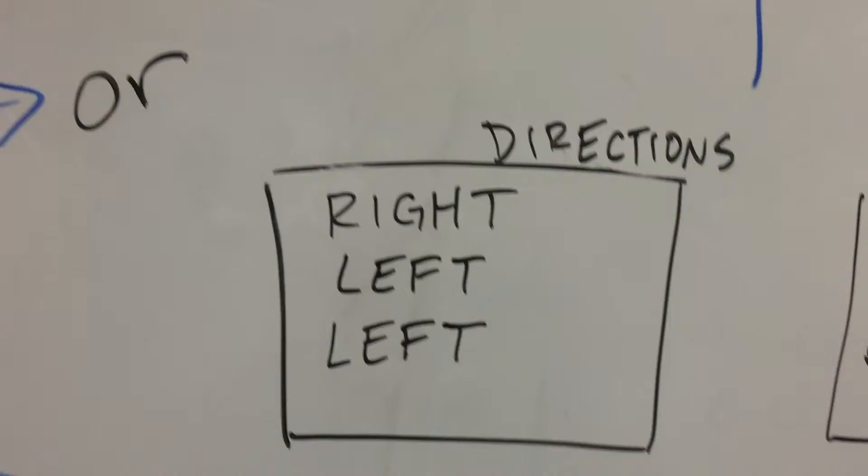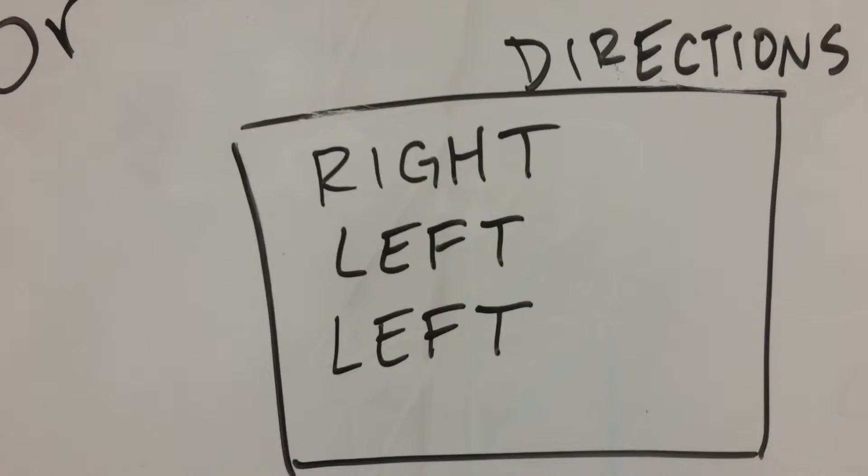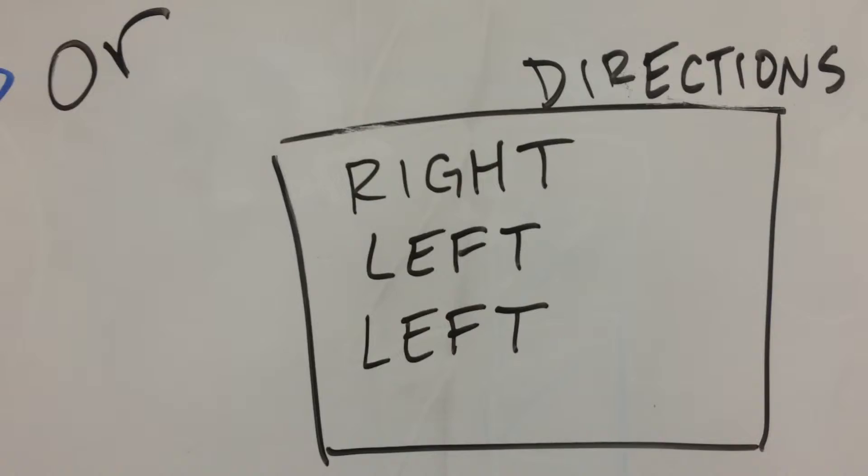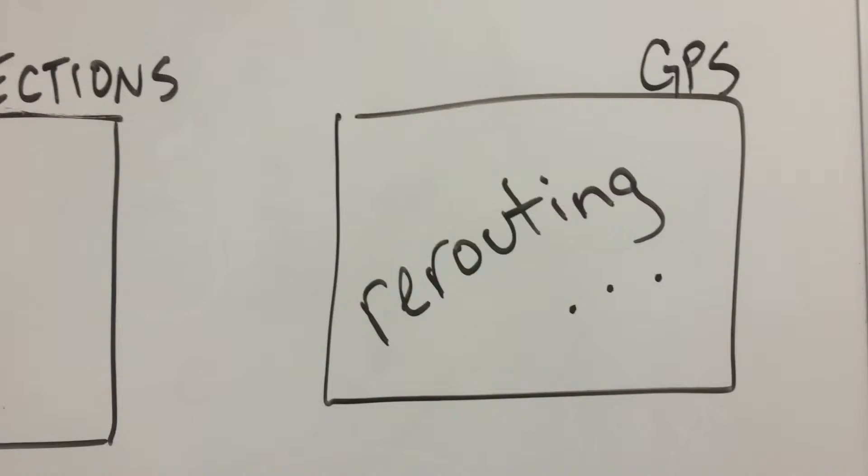Or imagine directions. You receive the directions to turn right on a given street and left on the second street and left on your third street that you hit. If you follow these directions and make a misstep, you won't know until the end. However, given a GPS, if you make a wrong turn, it will reroute and put you on the correct path.